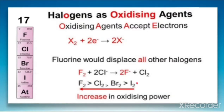So we can say that top to bottom in a group, the oxidizing power decreases. That means fluorine has the greatest oxidizing power and iodine has the least oxidizing power.